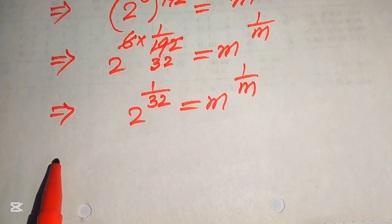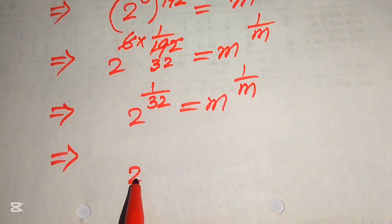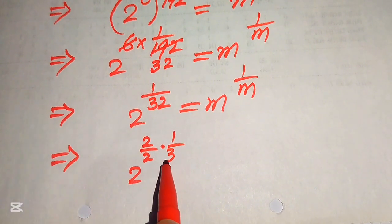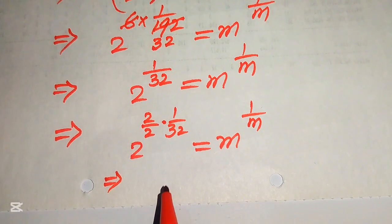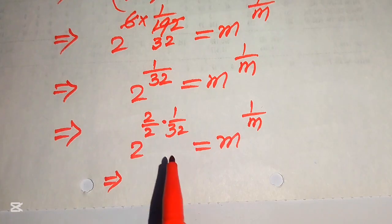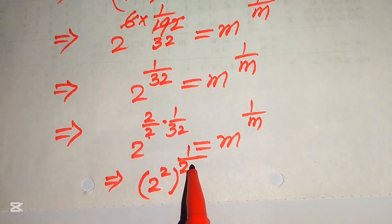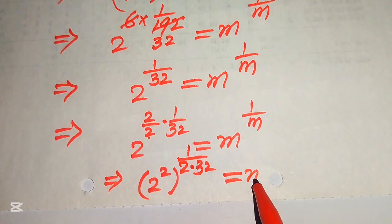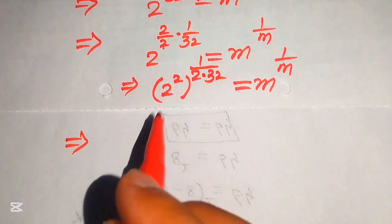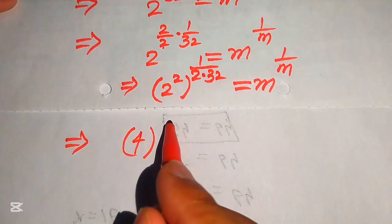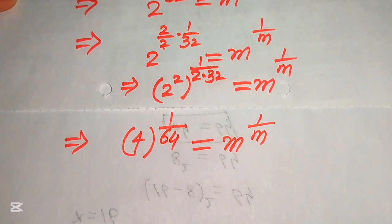In order to make the exponent the reciprocal of its base, we multiply and divide the exponent of 2 by 2, giving us 2 to the power of 2 over 2 multiplied by 1 over 32. We move the extra 2 inside the term, making it 2 squared, and 2 times 32 equals 64. So we get 4 to the power of 1 over 64, equals m to the power of 1 over m.